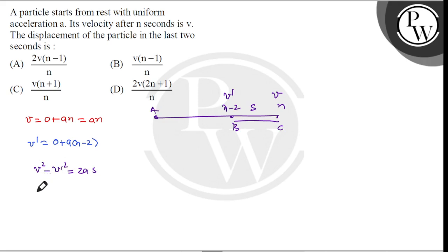v square value is a n square. v dash value is a into n minus 2 whole square equals 2 a s. This becomes a square n square minus - this will be a into n square plus 4 minus 4 n equals 2 a s.